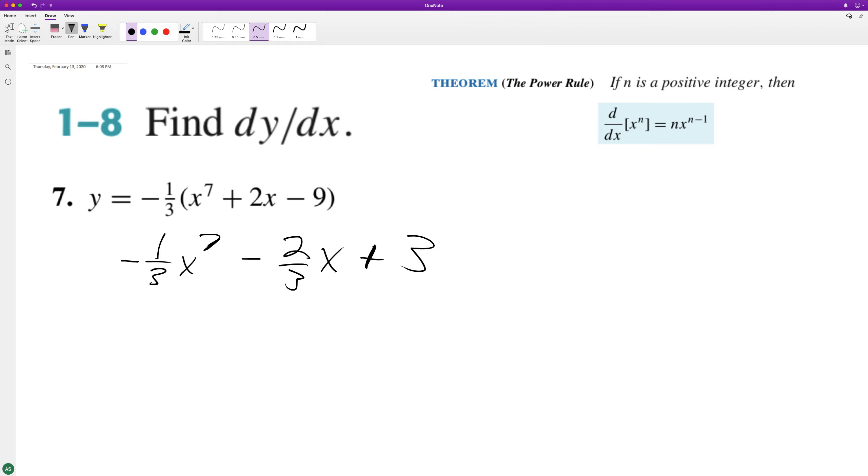So using the power rule, we have negative one-third times seven times x raised to the seven minus one, minus two-thirds times one, and